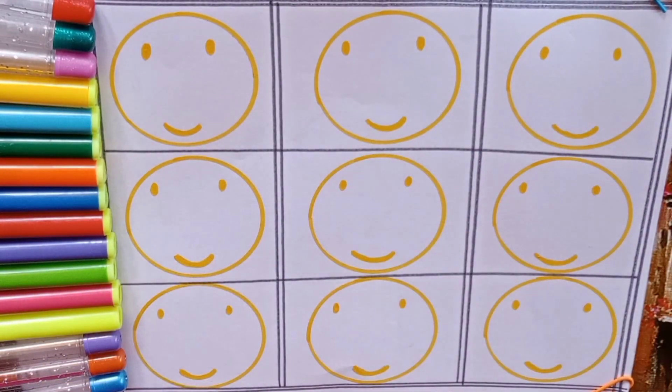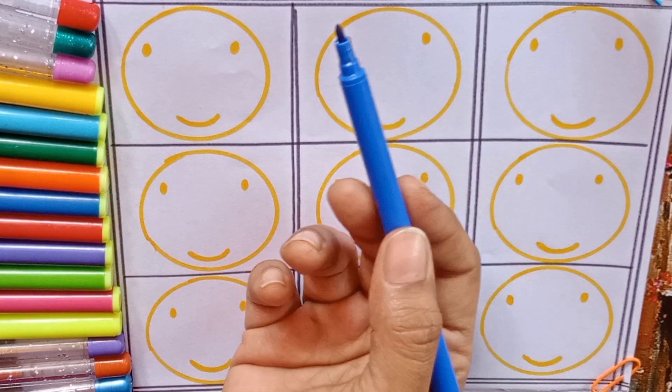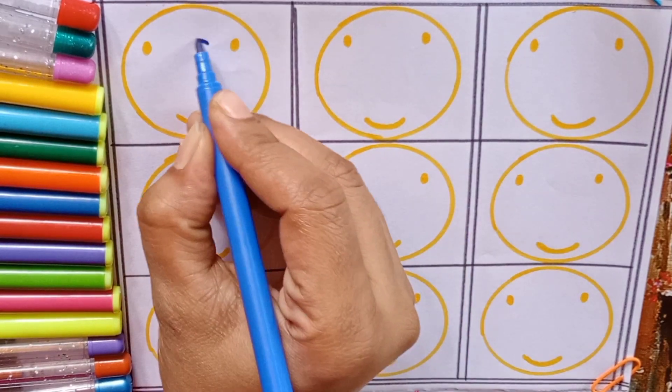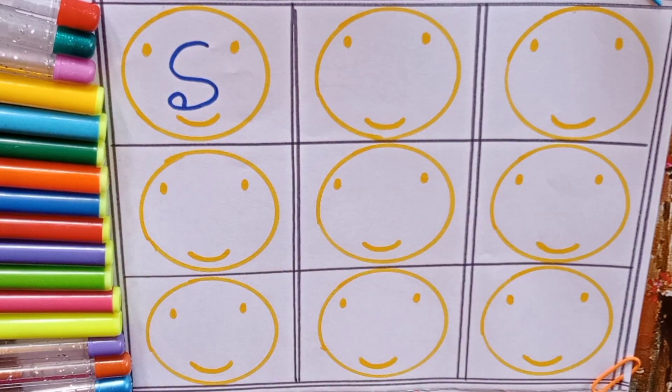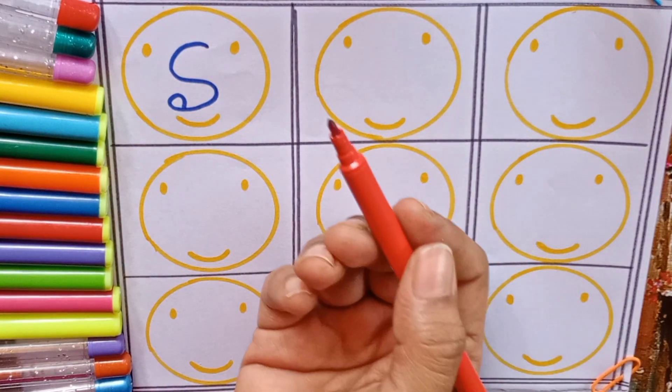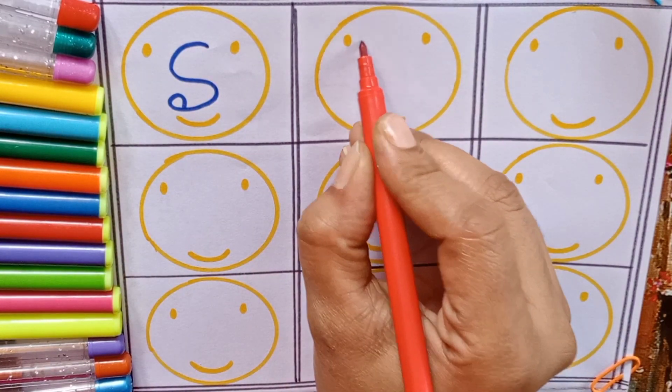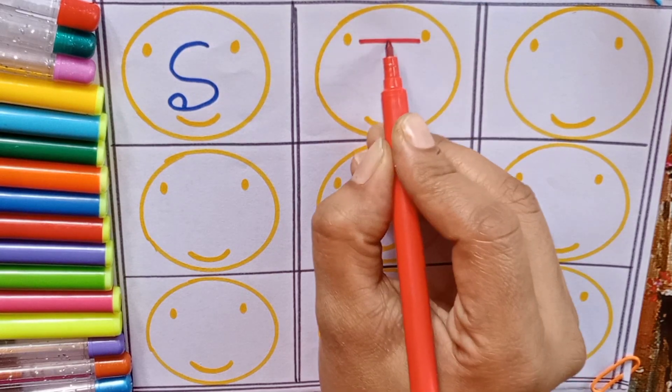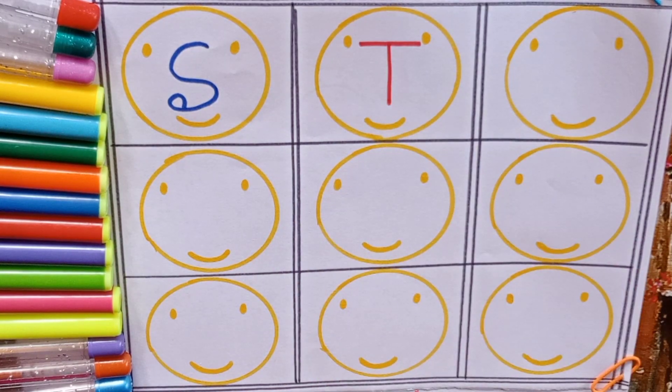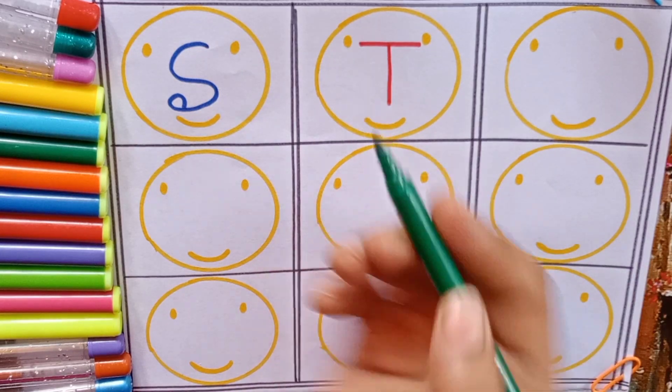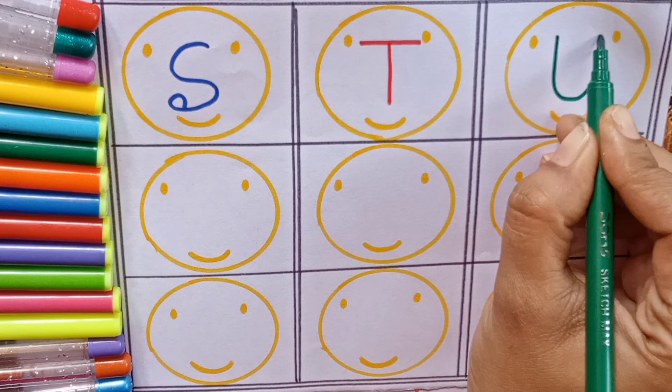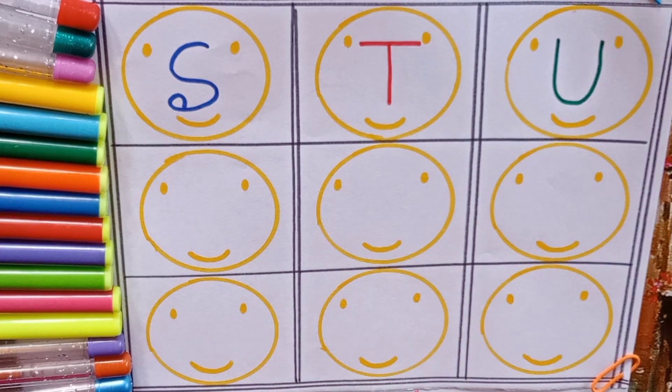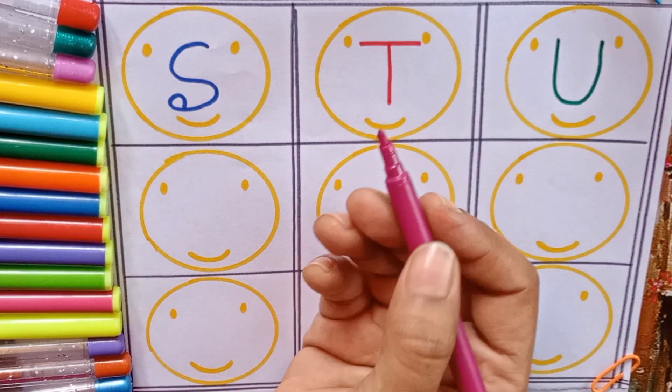Today we will learn alphabets. Let's start. Blue color: S is for snake, S for also spider. Red color: T, T for tomato, T for also table. Green color: U, U for utensils, U for also uniform. Pink color: V, V for volcano, V for also valley.